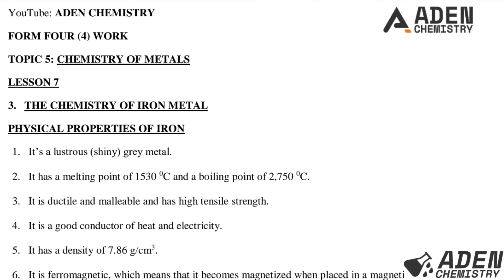Let's start with the physical properties of iron. Number one: it is lustrous, meaning a shiny grey metal. Number two: it has a melting point of 1530°C and a boiling point of 2750°C. Number three: it is ductile and malleable and has high tensile strength. Number four: it is a good conductor of heat and electricity. Number five: it has a density of 7.86 g/cm³. Number six: it is ferromagnetic, meaning it becomes magnetized when placed in a magnetic field.